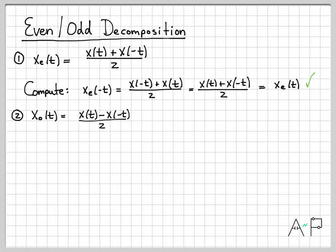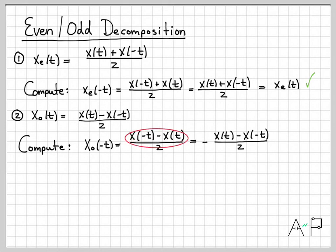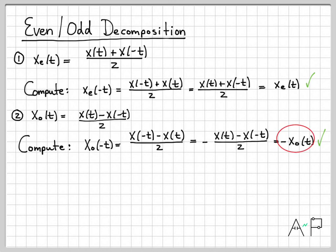For the odd component, our claim is that x_o(t) equals x(t) minus the time-reversed version of x(t), divided by 2. To establish that this is odd, we compute the time-reversed version of x_o(t) by replacing all t's with minus t. Then we factor out a negative sign, rewriting x(minus t) minus x(t) as the negative of x(t) minus x(minus t). That quantity is exactly x_o(t), so time-reversing gives minus x_o(t). By definition, this means it is indeed an odd signal.